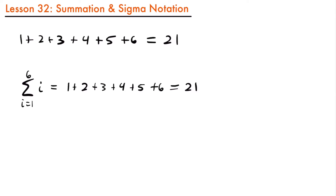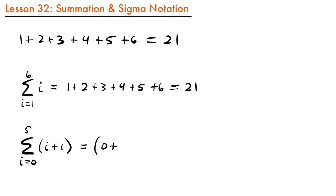We could write this as the sum from i equals 0 to 5 of i plus 1. To calculate this, we start with i equals 0 and plug it into what we're summing — the sum of i plus 1 starting from 0 and ending at 5. So for our first value i equals 0, we have 0 plus 1. For i equals 1, we add 1 plus 1. We're moving up to 5, and we plug each value into the expression.